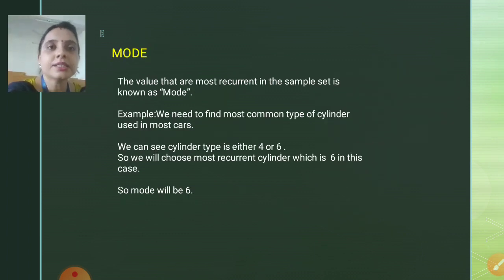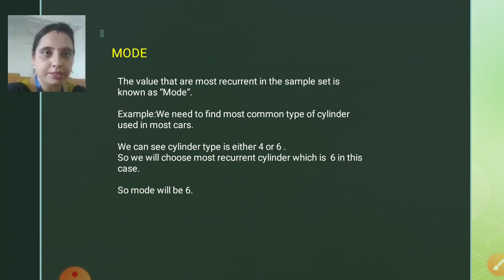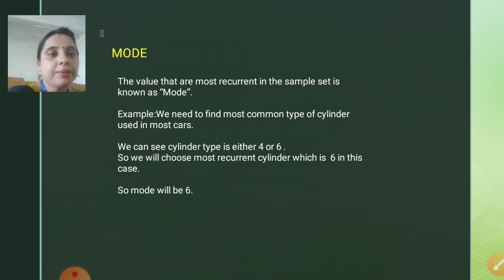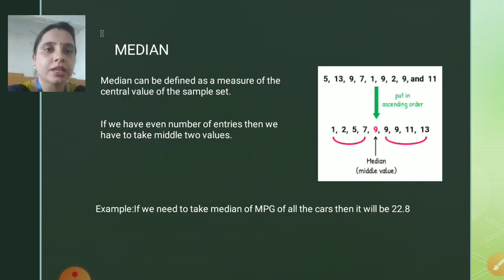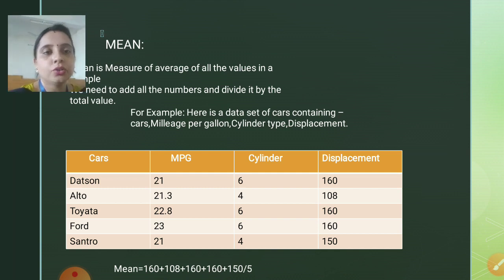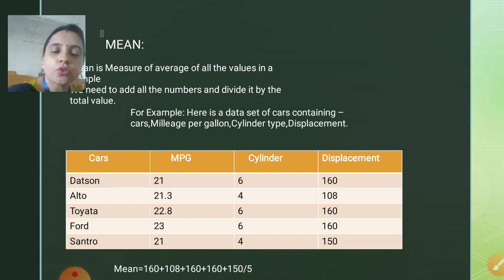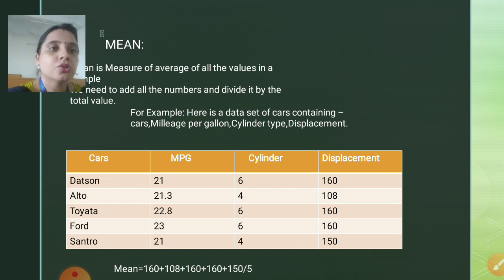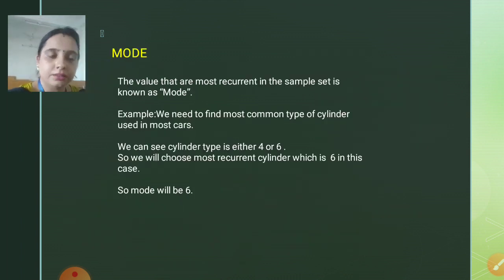Moving ahead to our last topic, that is mode. Mode is the third and most important part. It indicates the values that are most recurrent in the sample set — the value which is occurring or recurring more frequently. The example we can take is the same cylinders used in most cars. We need to find which type of cylinder is in more popular use. Looking at the table, there are two types of cylinders: six and four. The six-type cylinder is used by three cars, and the four-type cylinder is used by two cars — Alto and Centro. Six-type cylinder is occurring more, so the mode of this dataset will be 6.